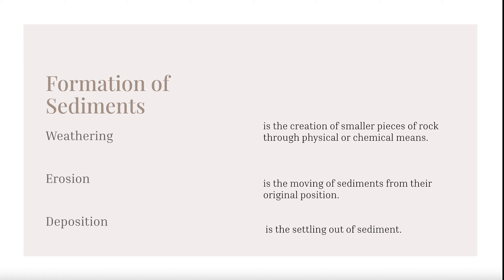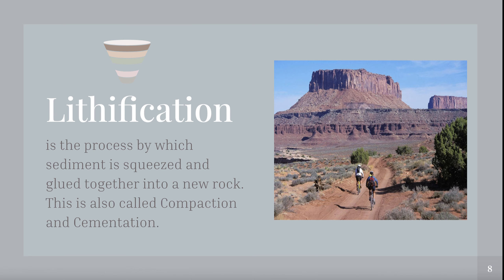The next blank says something 'is the moving of sediments' — that's erosion, so fill in erosion. Then it says something 'is the settling out of the sediment' — that's deposition. Below that, there's a spot for two words: the process by which sediment is squeezed and glued together into a new rock. Write compaction and cementation in those two blanks.